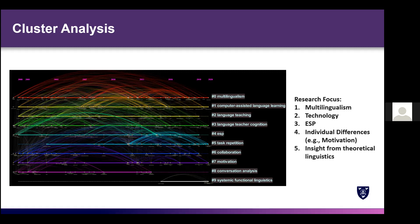The five most important research focuses identified are: first, multilingualism; second, technology — specifically computer-assisted language learning and computer-mediated communication; third, ESP, English for Specific Purposes; fourth, individual differences variables like motivation; and fifth, insights from theoretical linguistics such as systemic functional grammar.